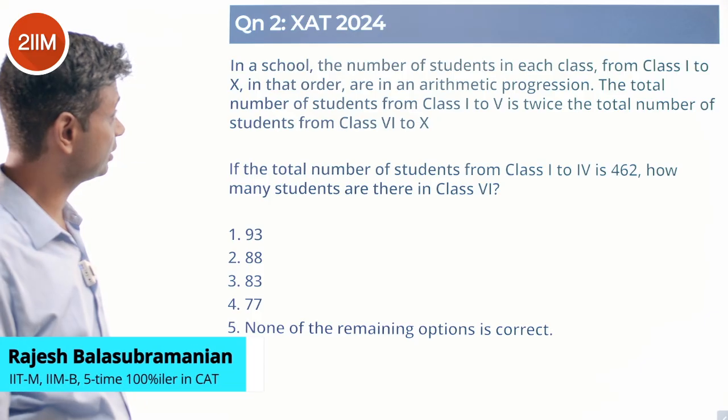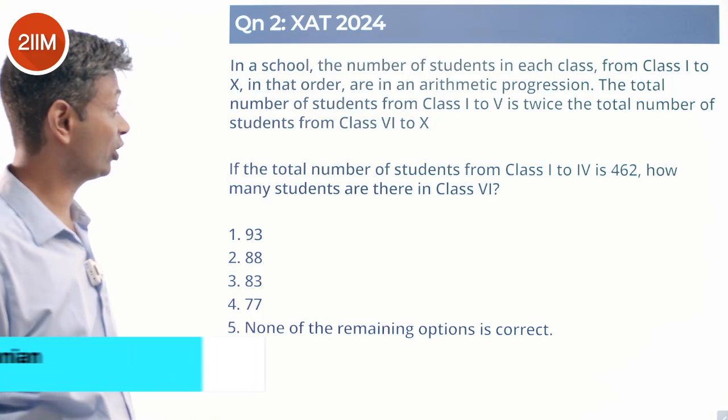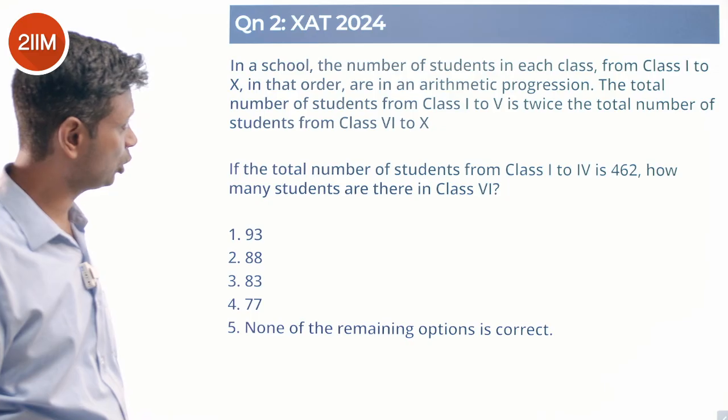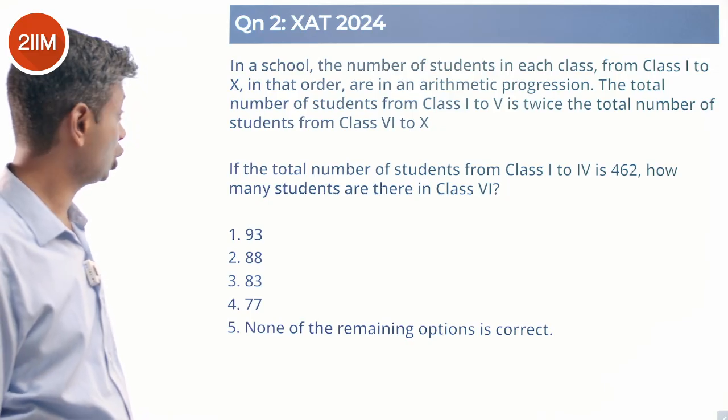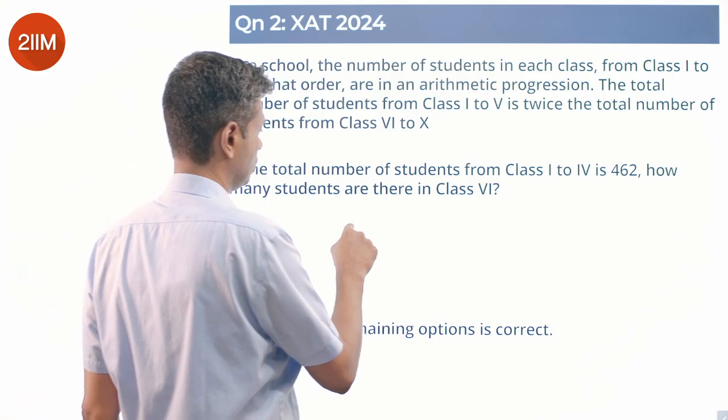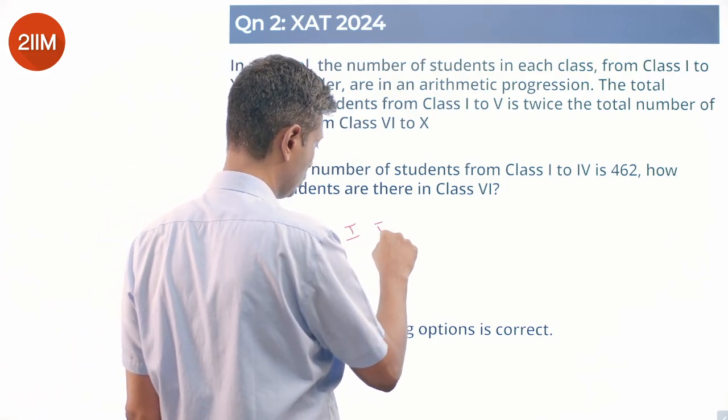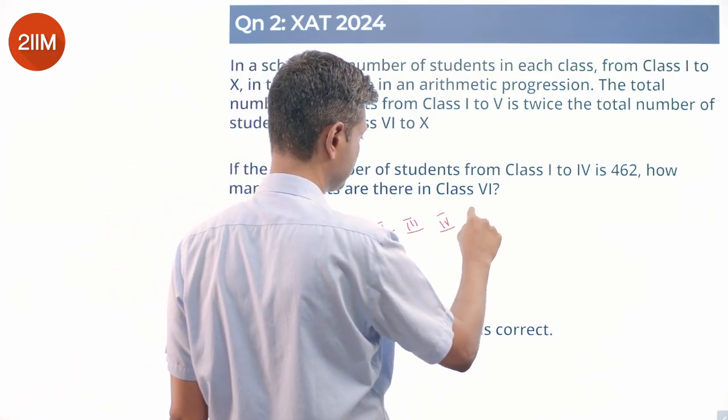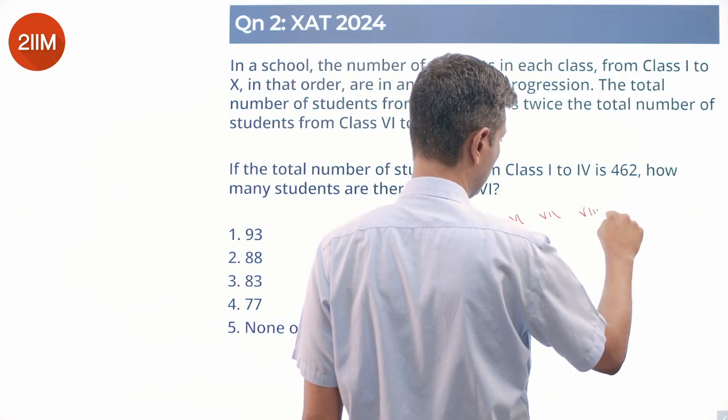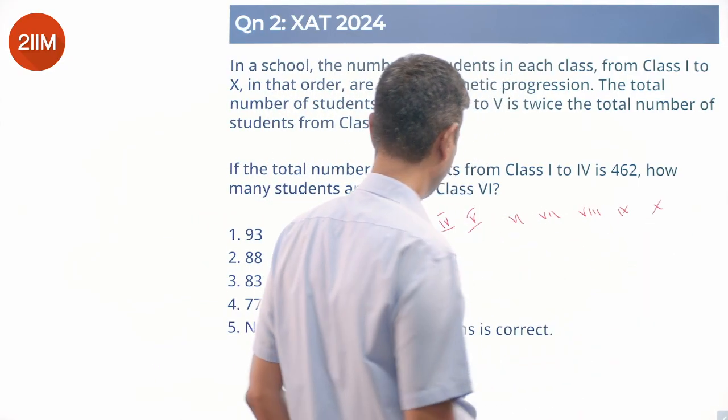In a school, the number of students in each class from 1 to 10, in that order, are in an arithmetic progression. The total number of students from class 1 to 5 is twice the number of students from 6 to 10. So, classes 1, 2, 3, 4, 5, 6, 7, 8, 9, 10.